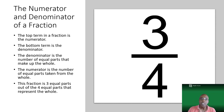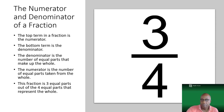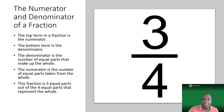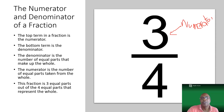The two important terms related to that are the numerator and denominator. The top term of the fraction — the number of parts that are chosen — is the numerator. The bottom number — the total number of equal parts the whole is divided into — is the denominator. So in this fraction, the 3 is the numerator and the 4 is the denominator.